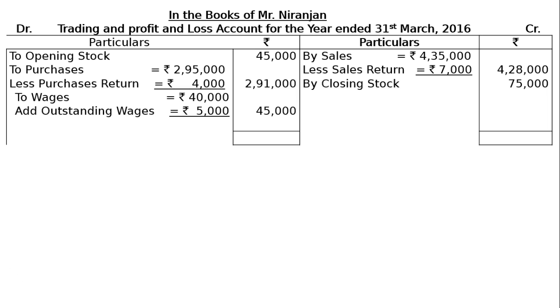The outstanding wages is a liability — specifically a current liability — and will be shown under current liabilities as outstanding wages. The credit side totals Rs 5,03,000. We write the difference on the debit side as gross profit carried down: Rs 1,22,000. The profit and loss account then opens with gross profit brought down of Rs 1,22,000.